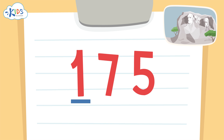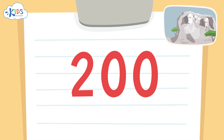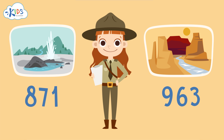Now let's round 175 to the nearest hundred. We'll use the strategy of underlining the hundreds place and drawing an arrow to the tens place so we know what numbers we have to look at. I see a seven in the tens place — I know if it's five or higher we have to round up. The one in the hundreds place is underlined, so we'll round the 100 up to 200. When rounding to the hundreds place, the numbers in the tens and ones places become zeros.